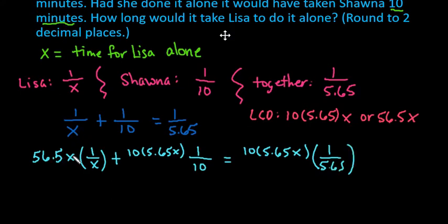So with this, if we go through, on the first one the X would cancel out so we would just be left with the 56.5. On the second one the 10s cancel out so we're left with 5.65X. On this one the 5.65 cancels out so we're just left with 10 and the X.